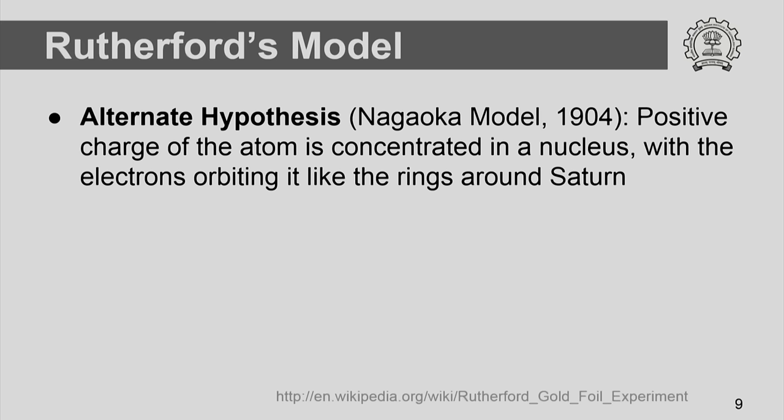The scientific method permits you to revise the hypothesis and revise the models. There were alternate models being proposed at the same time. A Japanese physicist, Nagaoka, in 1904 had proposed a model which can be called the planetary model. In this model he proposed that positive charges in an atom were concentrated in the form of a nucleus, with electrons orbiting around it like the rings of Saturn. This model was a hypothesis based on certain observations in nature and drawing parallels.